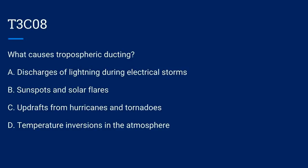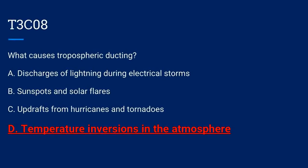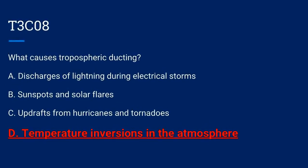T3C08. What causes tropospheric ducting? A. Discharges of lightning during electrical storms. B. Sunspots and solar flares. C. Updrafts from hurricanes and tornadoes. Or D. Temperature inversions in the atmosphere. The correct answer is D: temperature inversions in the atmosphere.